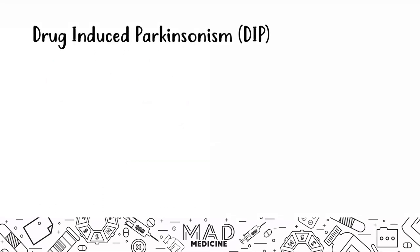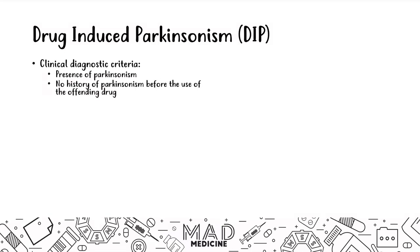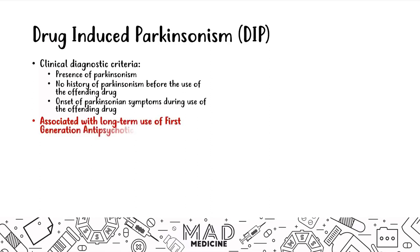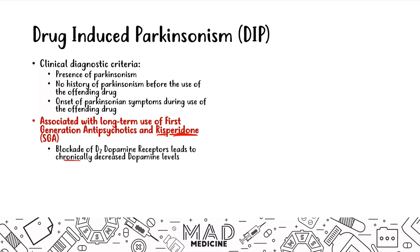Drug-induced parkinsonism (DIP) is an important side effect of high-potency first-gen antipsychotics. The diagnostic criteria require a history of parkinsonism without that history existing before the offending drug, with symptom onset coinciding with drug initiation. DIP is also associated with second-gen antipsychotics — specifically risperidone, the only second-gen that causes DIP — because risperidone also blocks D2 receptors, leading to chronically decreased dopamine levels, the hallmark of Parkinson's disease.